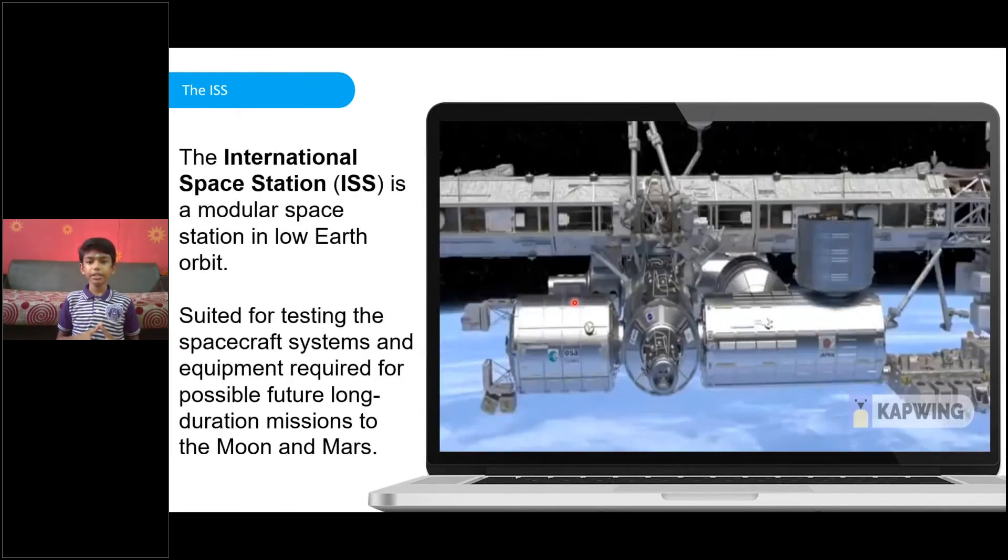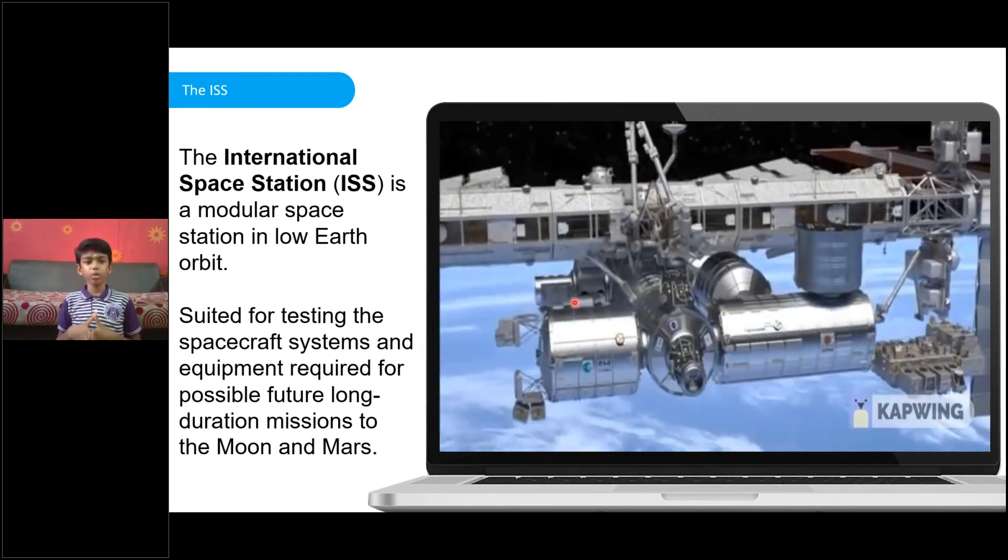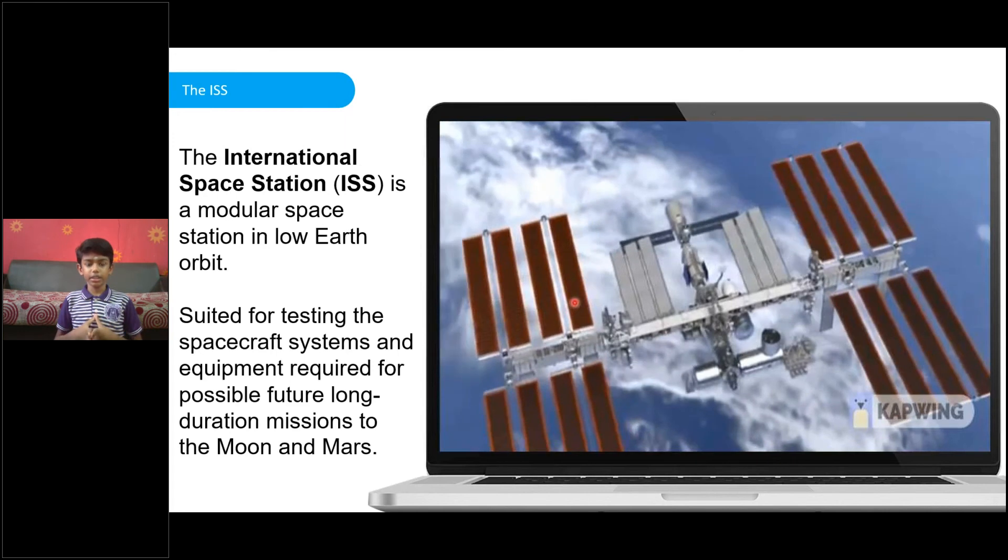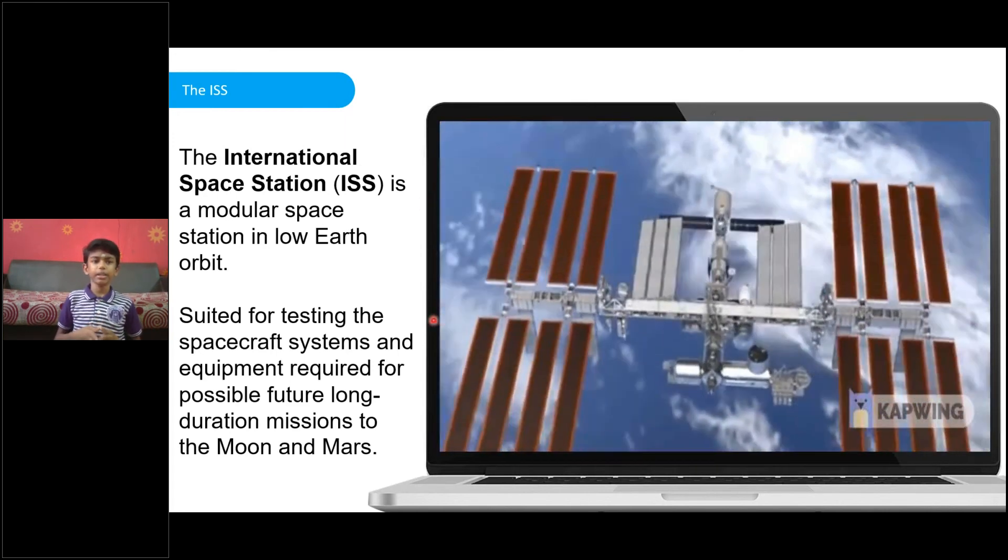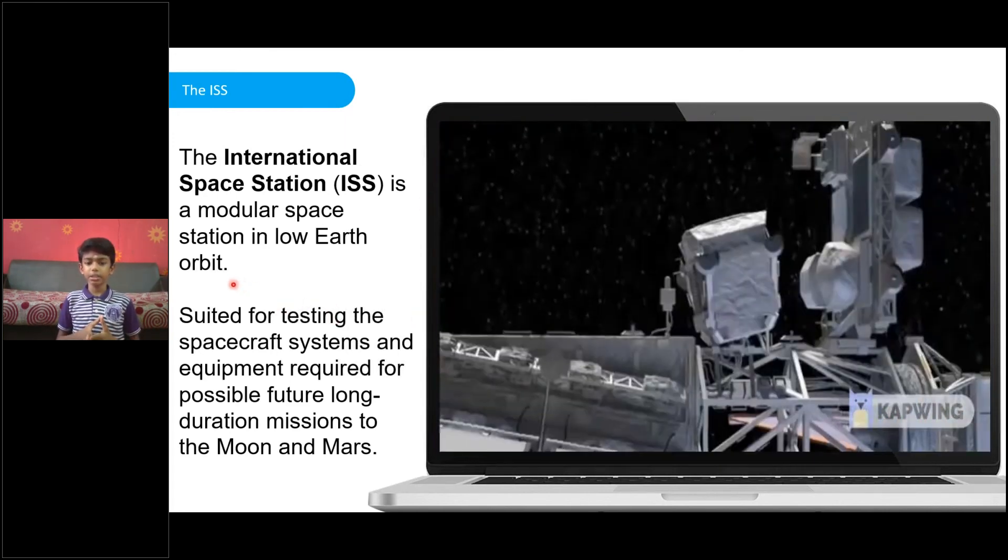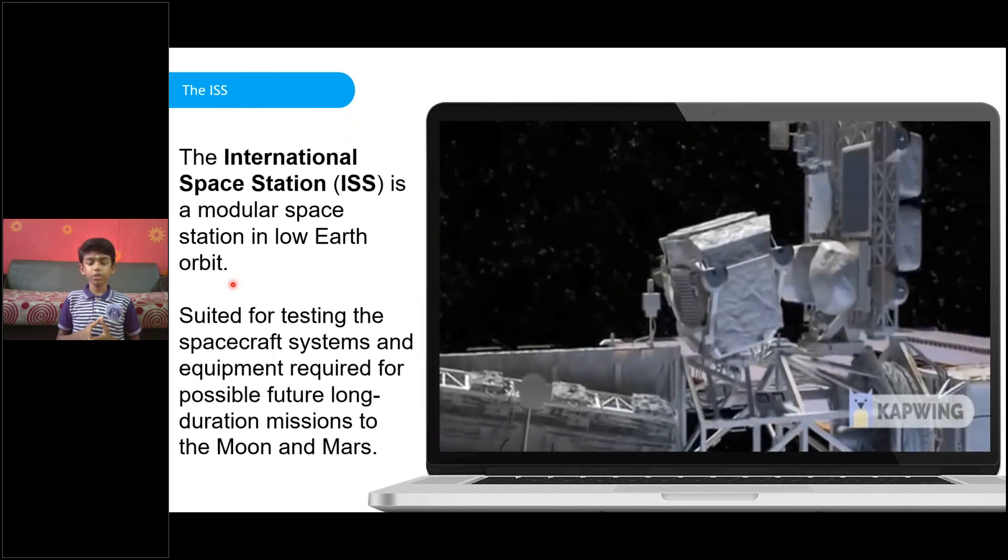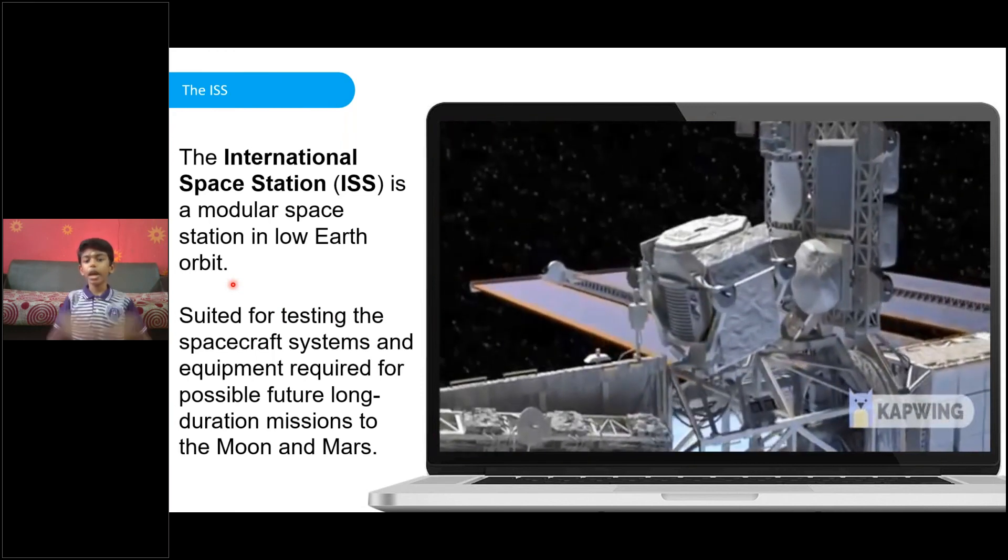ISS is a multinational collaborative project joining USA, Russia, Europe, Japan, Canada and many more countries to do science experiments that can only be done in space and plan possible future missions to Mars, Moon and asteroids.